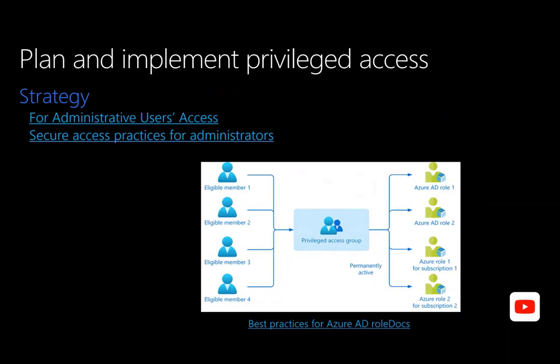Organizations want to minimize the number of people who have access to secure information or resources to reduce the chance of a malicious actor gaining access or an authorized user inadvertently impacting a sensitive resource. PIM provides time-based and approval-based role activation to mitigate the risk of excessive, unnecessary, or misused access permissions. First, you need to identify your stakeholders, then follow the principles of least privilege and delegate rights accordingly. After cleaning up privileged role assignments, decide which roles to protect with PIM.